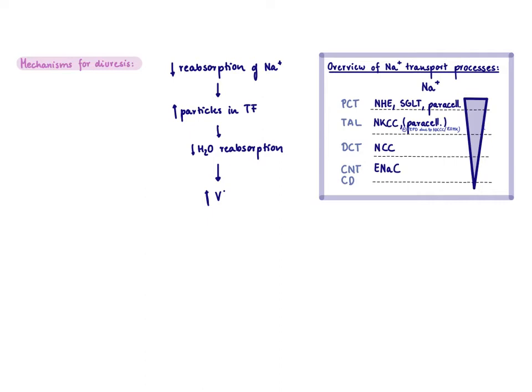You can also say there's less water reabsorption, and whenever you have less water reabsorption, you're going to increase urine flow. Now let's think about how you can block sodium reabsorption, and to answer this question we need to understand how sodium is reabsorbed in the kidney tubule.